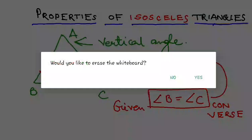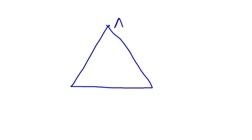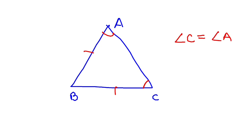Let me sum it up so you understand in simple terms. If I take an isosceles triangle ABC where A is the vertical angle and AB and BC are equal, then which two angles will be equal? The opposite of AB is angle C, and the opposite of BC is angle A. So angle C will be equal to angle A.